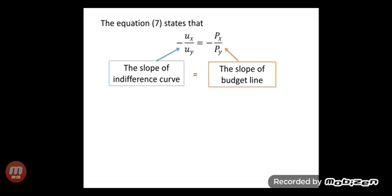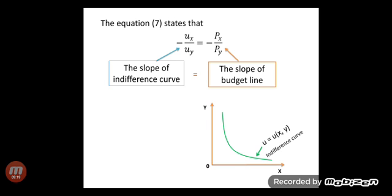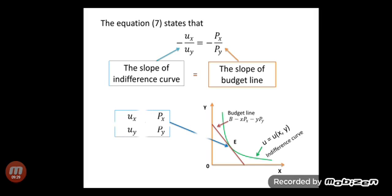This can be explained with the help of a diagram. In this two-dimensional diagram, the horizontal axis represents commodity x and the vertical axis represents commodity y. The indifference curve and the budget line are shown, and the point e is where the budget line is tangent to the indifference curve. Corresponding to point e, −ux/uy = −px/py, and the equilibrium level of consumption is x-bar for x and y-bar for y.